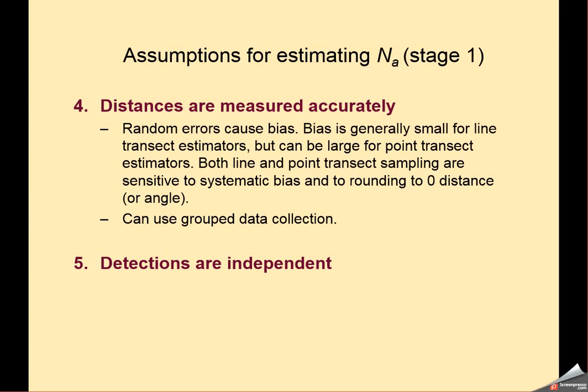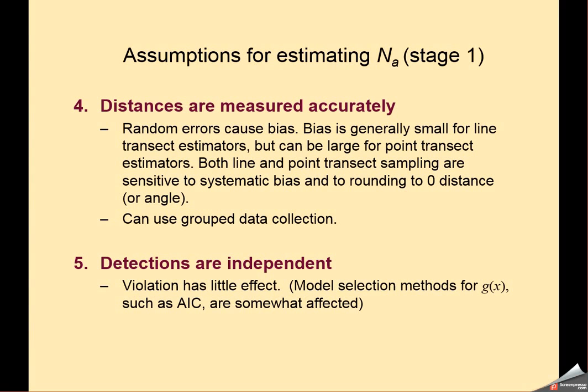We also would like to assume, in trying to do the best job we can of estimating n sub a, that the detections are independent of one another. Now, this has long been held as a very important assumption. Recent work by Professor Buckland has indicated that that is not a terribly important assumption to have. As I noted here on the slide, if you violate independence of animal detections, there's actually very little consequence of that in the overall estimate of abundance. There are some knock-on effects in that model selection might be damaged and things like AIC might not behave quite as we assume. But other than that, detections need not necessarily be independent of one another.